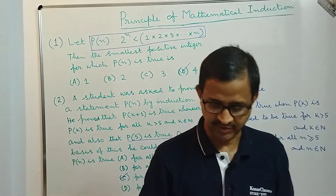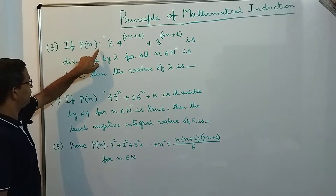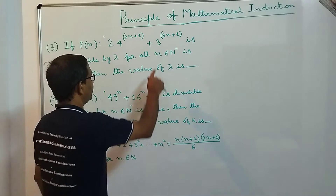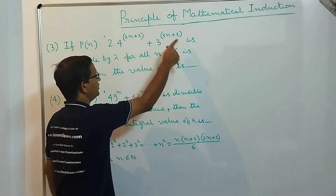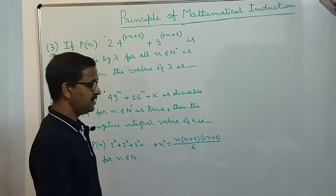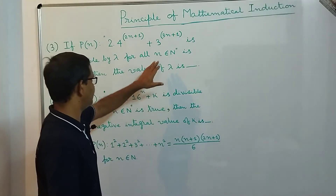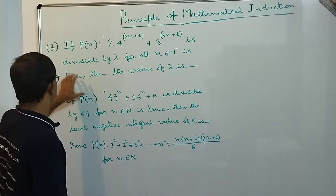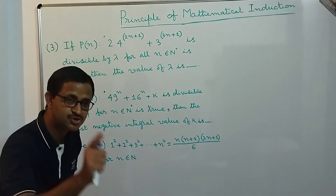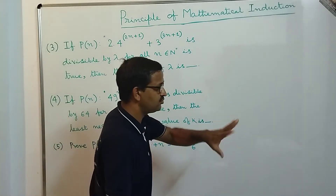Now let's proceed to the third question. If P(n): 2·4^(2n+1) + 3^(3n+1) is divisible by λ for all n ∈ ℕ is true, then what is the value of λ?